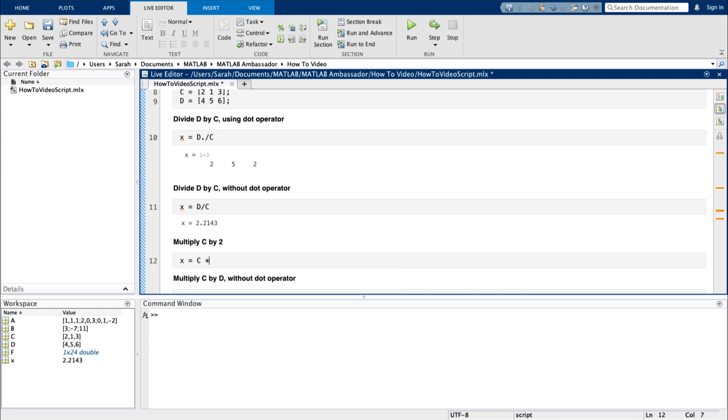How about if I wanted to multiply c by 2? The dot operator is not necessary in this case, since 2 is a scalar.